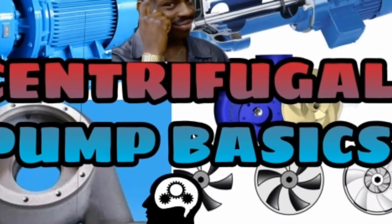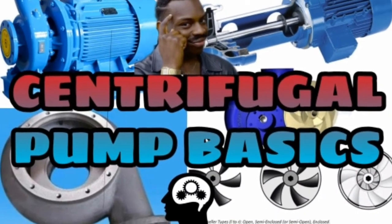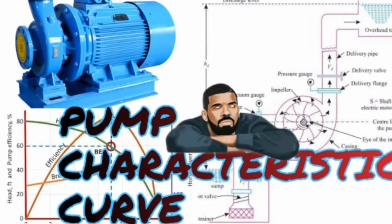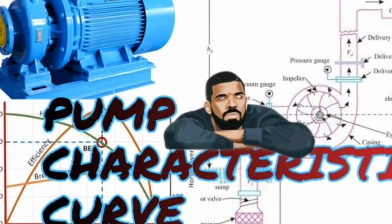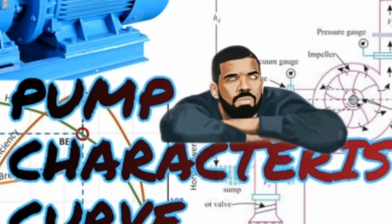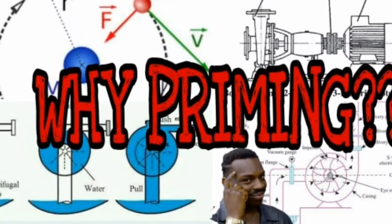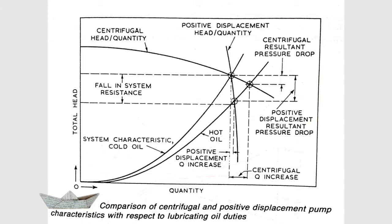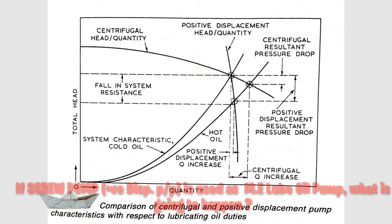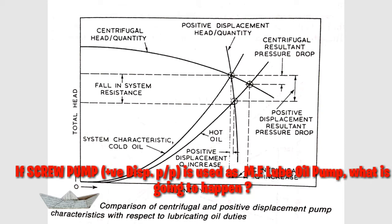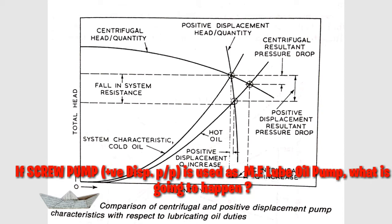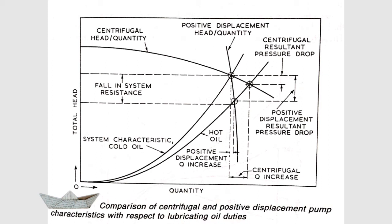If you have not watched my previous video regarding centrifugal pump basics, pump characteristic curve, and the requirement of priming — why priming is required in a centrifugal pump — you can go to my description or video section and check it out. So this is the centrifugal pump QH curve, and this is the positive displacement pump QH curve. Let's analyze what happens if you use a screw pump for main engine lube oil duties.